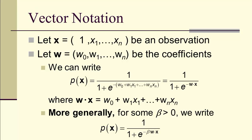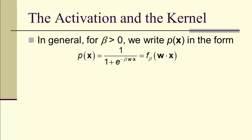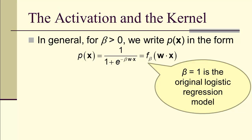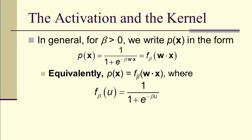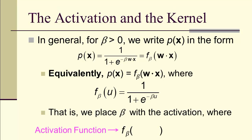In general, for any beta greater than 0, we can define a probability model: 1 over 1 plus e to the negative beta w dot x. We can think of the logistic function as an outer function operating on this dot product or inner product w dot x. If beta equals 1, that's the original logistic regression model. We can think of f_beta of u as 1 over 1 plus e to the negative beta u. We'll call that the activation function, and then u is the kernel, that's the w dot x.